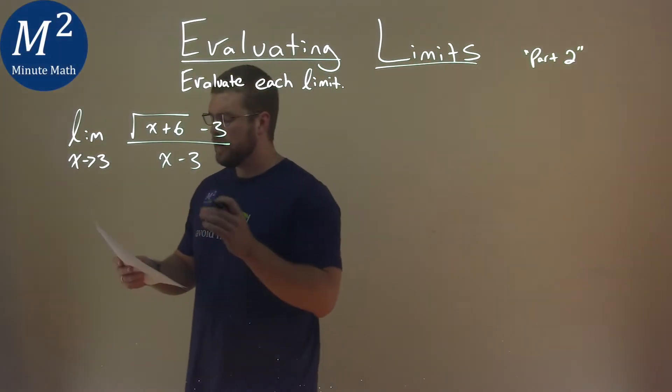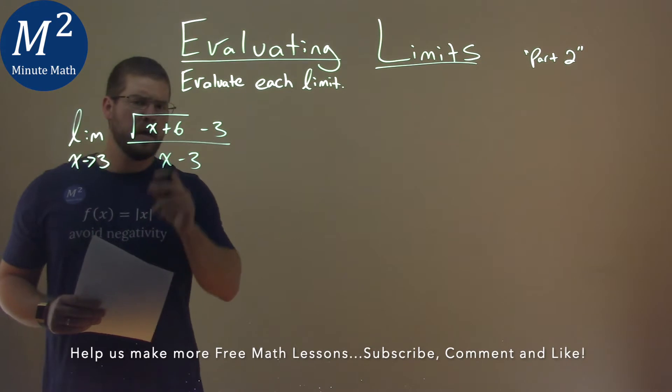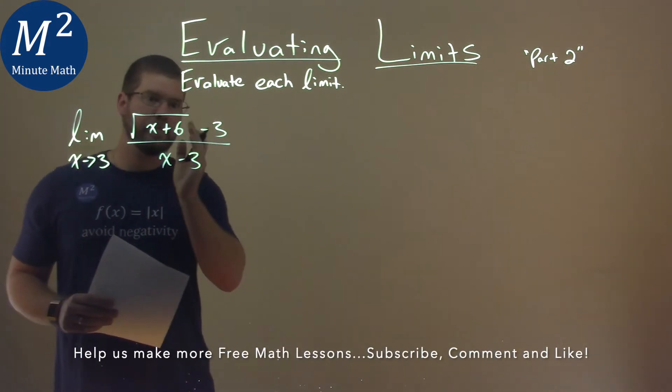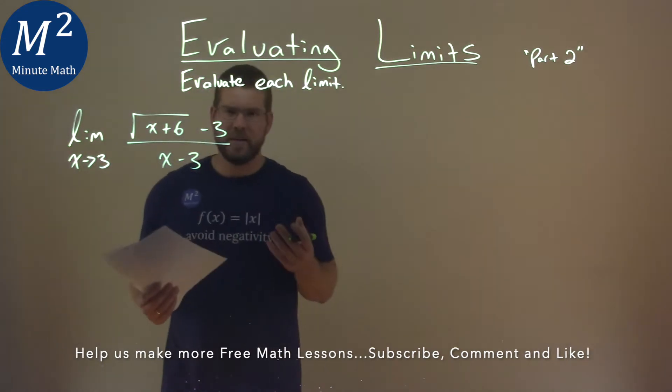We're given this problem right here. The limit as x approaches 3 of the square root of x plus 6 minus 3 all over x minus 3, and we're going to evaluate this limit.